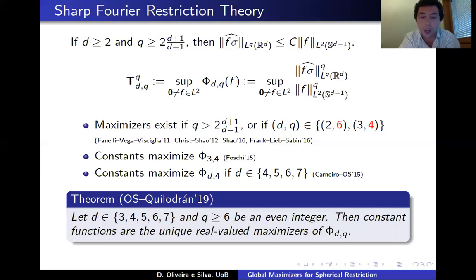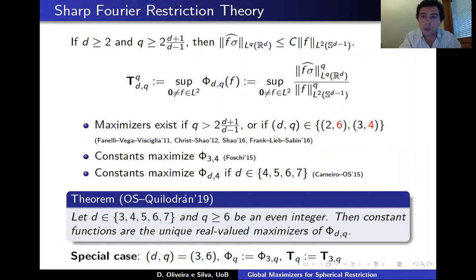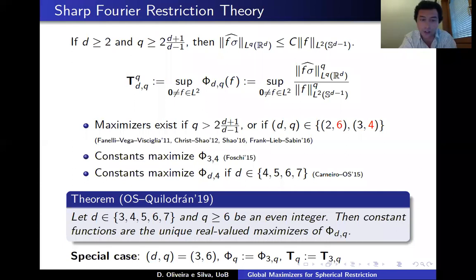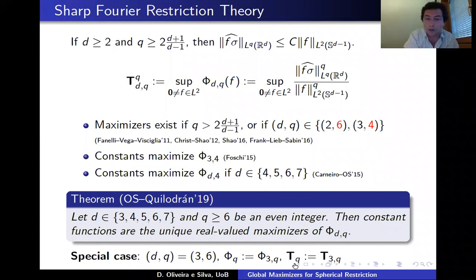To give you an idea of the ingredients, I will focus on the special case d = 3 and q = 6: I want to explain why constant functions are the unique real-valued maximizers for the L^2 to L^6 extension inequality on the two-sphere. Because of that I can simplify notation and drop the dimensional index from both the functional and the optimal constant. The plan is to present the key ingredients of the proof in this particular case.